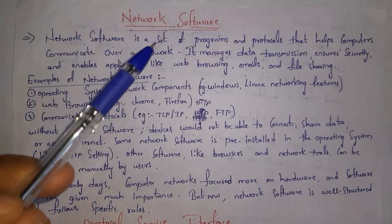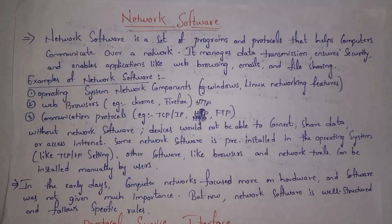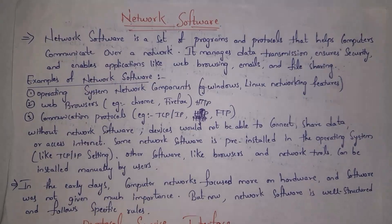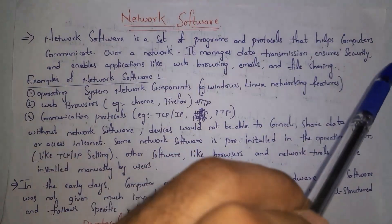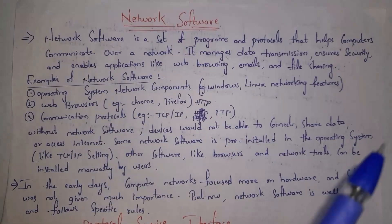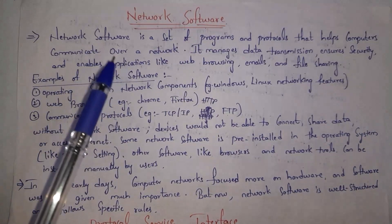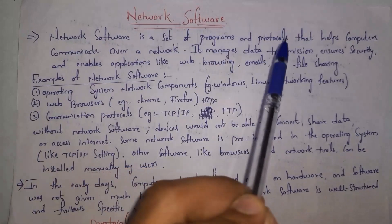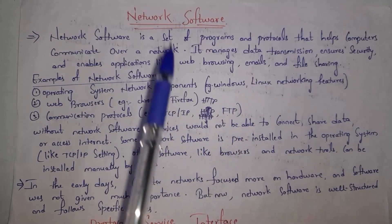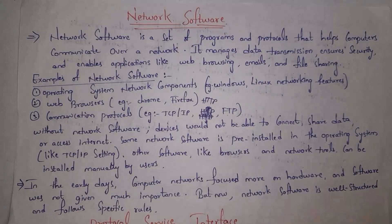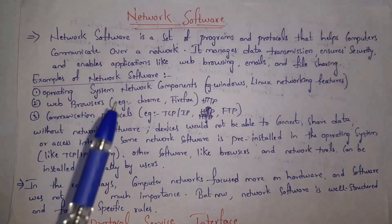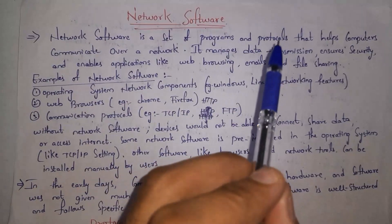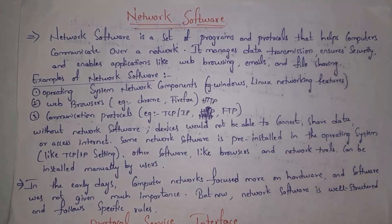Network software is a set of programs and protocols that helps computers communicate over a network. Protocols are nothing but rules. By using these protocols, computers can communicate in your network. Network software manages data transmission, ensures security, and enables applications like web browsing, emails, and file sharing. For example, Google Chrome software is an example of network software — it contains set of programs and protocols, and by using these we can communicate over the internet.